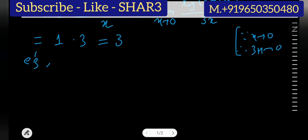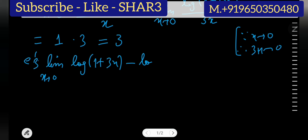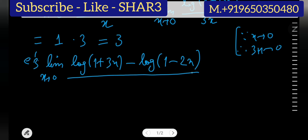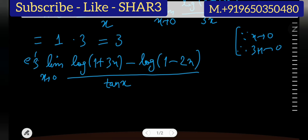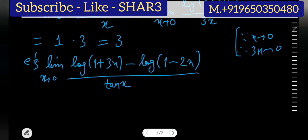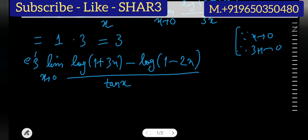Suppose we have: limit x approaches 0 of [log(1 plus 3x) minus log(1 minus 2x)] over tan x. Again, this is 0 by 0 form. We need to proceed carefully to solve this problem.